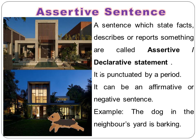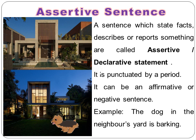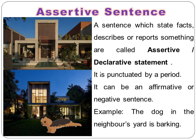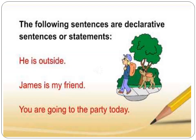Assertive sentence: A sentence which states facts, describes, or reports something is called an assertive or declarative sentence. It is punctuated by a period. It can be an affirmative or a negative sentence. Example — if you look at the picture, you will see: 'The dog in the neighbor's yard is barking.' The following sentences are declarative or assertive sentences, also called statements: 'He is outside.' 'James is my friend.' 'You are going to the party today.'